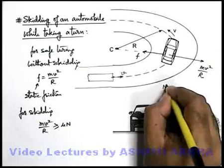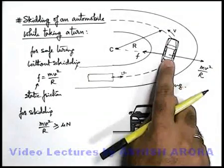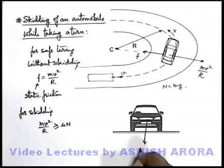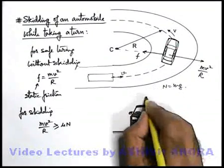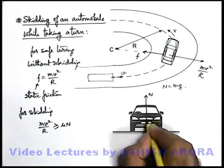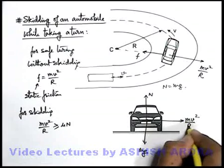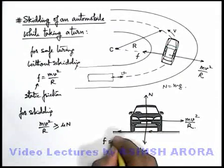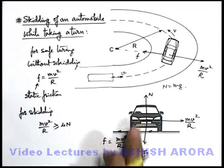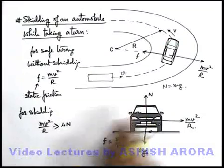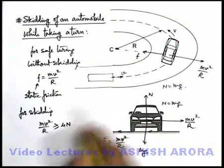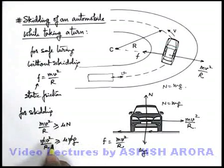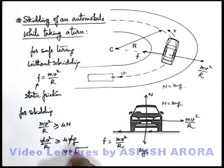The normal reaction acting on the car will be equal to mg. We can also analyze this situation pictorially. If we draw the cross section of the car: the car experiences mg downward, the net normal reaction is upward, and the car experiences a centrifugal force mv²/r outward. The wheels experience an inward friction balancing mv²/r. At the time of skidding, the limiting value of friction is μN, and here N equals mg. So mv²/r ≥ μmg, giving the speed as v = √(μrg).